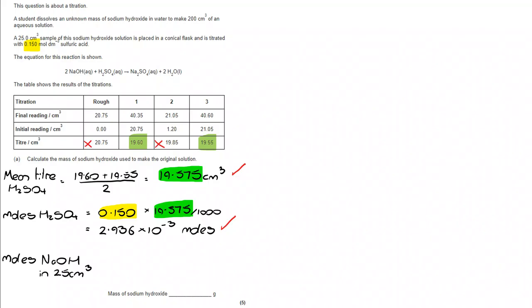If I know the moles of sulfuric acid, I can now work out the moles of NaOH in my 25 cm³ sample. What's important here is that we realize there is a 2 to 1 ratio of sulfuric acid to sodium hydroxide. So my number of moles of H2SO4 multiplied by 2 gives me my moles of NaOH, which is 5.87 × 10⁻³.